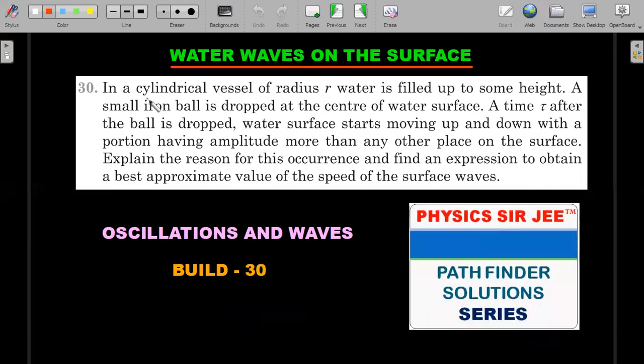So first one: In a cylindrical vessel of radius r, water is filled up to some height. A small iron ball is dropped at the center of the water surface. A time τ after the ball is dropped, the water surface starts moving up and down with a portion having amplitude more than any other place on the surface. Explain the reason for this occurrence and find an expression to obtain a best approximate value of the speed of surface waves based on the information given in the question.